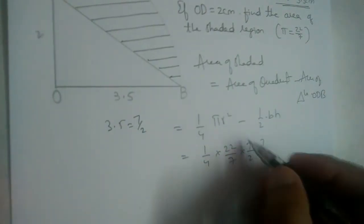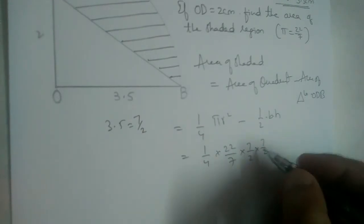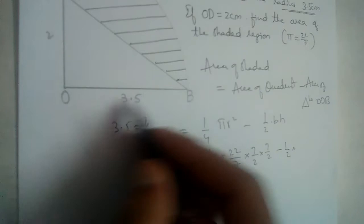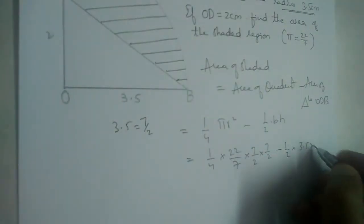So this will be 7 by 2, 7 by 2, because it is r square. So we are squaring 7 by 2. Half into base. Base of this triangle is 3.5 and height of this triangle is 2.